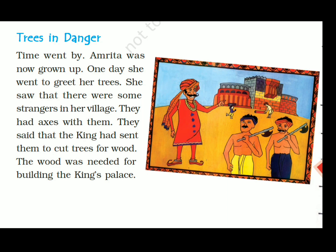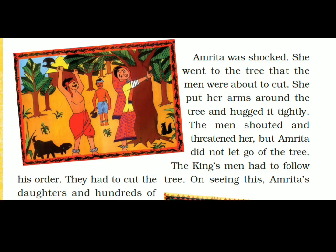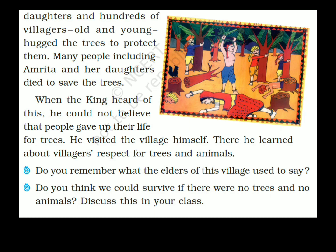Amrita was shocked. She went to the tree that the men were about to cut, put her arms around it, and hugged it tightly. The men shouted and threatened her, but Amrita did not let go of the tree. The king's men had to follow orders, so they had to cut the tree. On seeing this, Amrita's daughter and hundreds of villagers — old and young — hugged the trees to protect them.